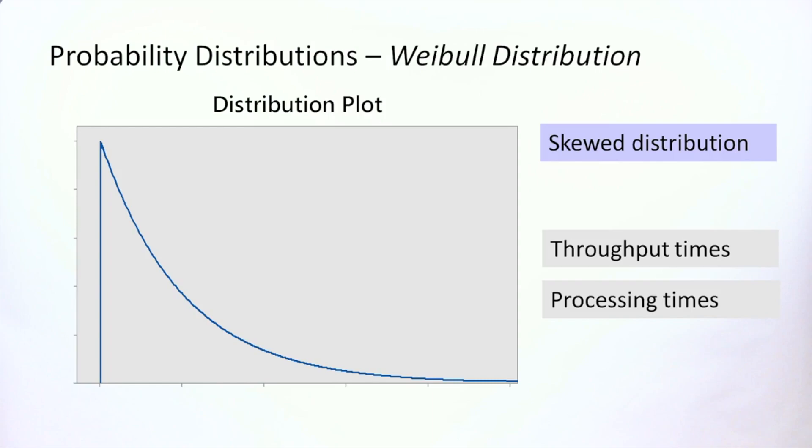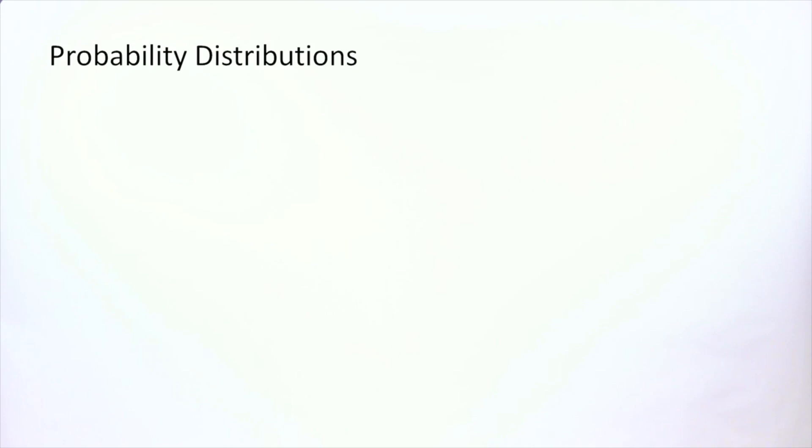The Weibull distribution can take various forms. There is a second distribution that is also often used for skewed data and that is a log normal distribution, and it looks like this.